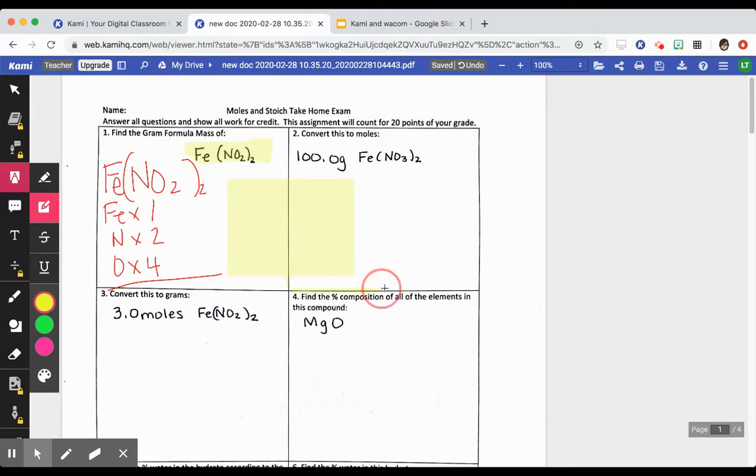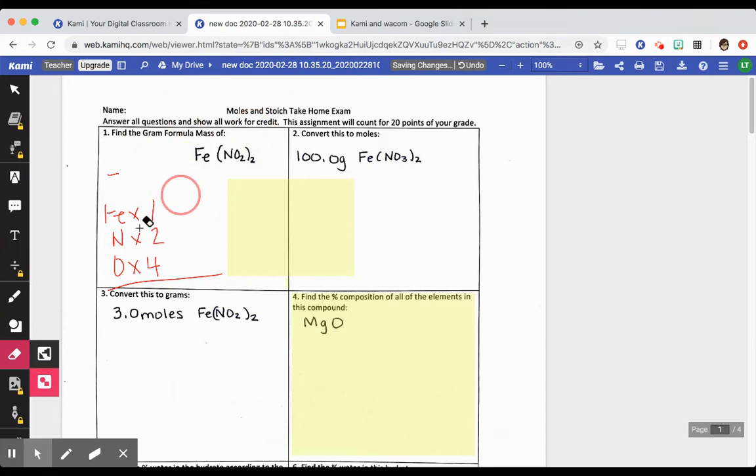You can highlight big areas. If I wanted to tell a student this whole thing needs to be redone, I can highlight a large area very easily. Besides using Kami to make a digital answer key, I'm going to show you something else.